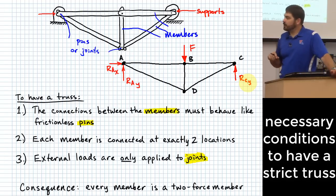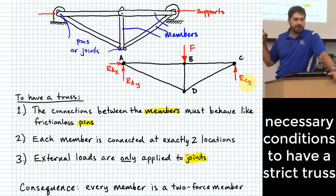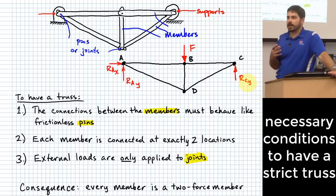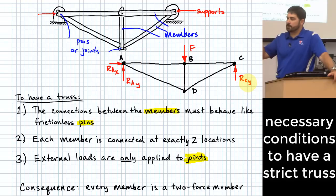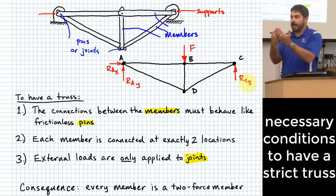Now let's talk about the rules for having a truss. To have a truss, here are the necessary conditions. First, all the connections between your members have to behave as if they are frictionless pins. When we say frictionless pins, we mean those pins will not react moments to each other — they won't react a rotational effect. They are free to rotate wherever those pins are connected, but they can transmit forces in any direction at the pin.